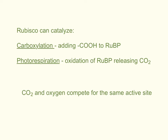It turns out rubisco has a little quirk. It not only does carbon fixation, or carboxylation — which is adding a carboxylic acid group from CO2 to RuBP to make PGA — but it also performs a second function known as photorespiration. The active site on rubisco can accept not only carbon dioxide but also oxygen, which oxidizes RuBP and releases carbon dioxide.